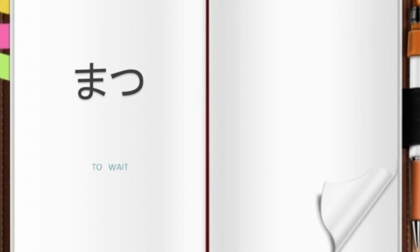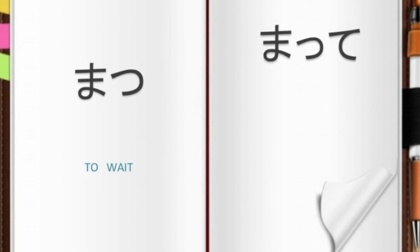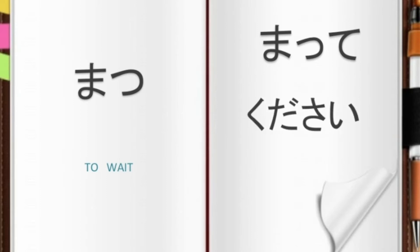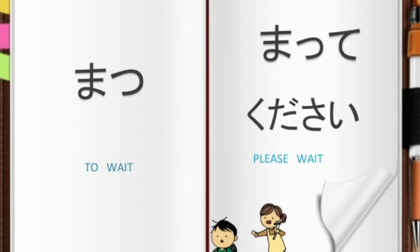Next, matsu, meaning to wait. Its te-form is matte. Matte means wait — it is a command. Again, to make it more polite, we add the word kudasai: matte kudasai, meaning please wait.